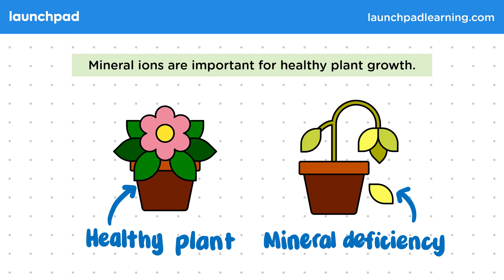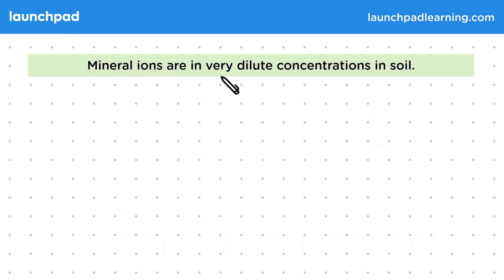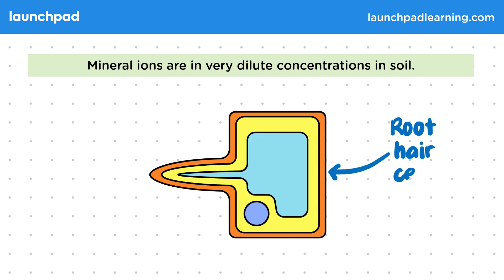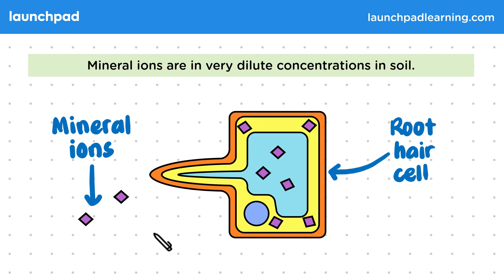So where do plants get these mineral ions from? Mineral ions are present in very dilute concentrations in soil. This diagram shows a root hair cell, which has a large surface area and is specialised for the uptake of water and nutrients from the surrounding soil. The small purple squares represent mineral ions, which are available in quite a low concentration outside the cell compared to inside the root hair cell. So how do plants get these minerals from outside the cell to inside?